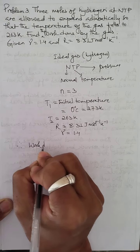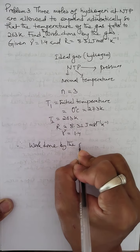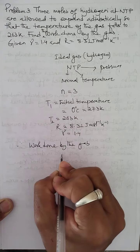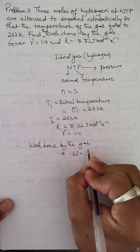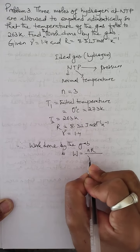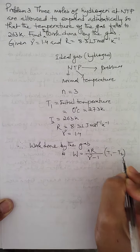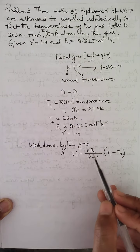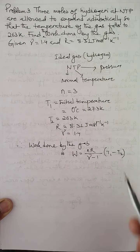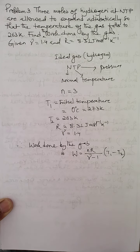The formula for work done by the gas in an adiabatic process in terms of temperature is: W = nR(T1 − T2) / (γ − 1). Since T1 is greater than T2, the formula applies directly. This formula has already been derived and explained in detail in the topic on work done under adiabatic expansion.